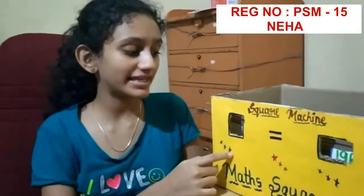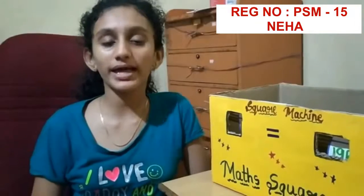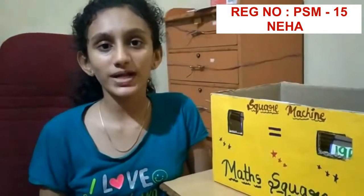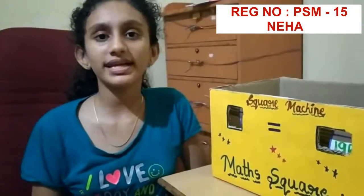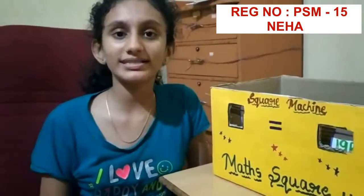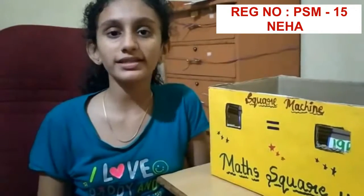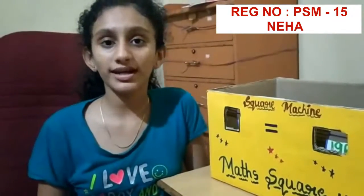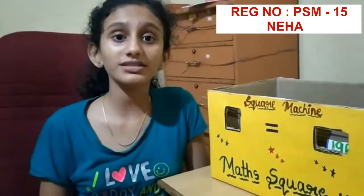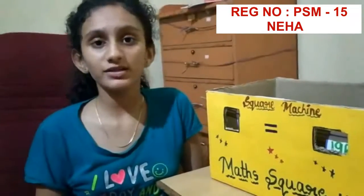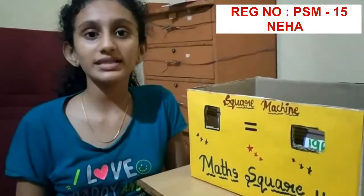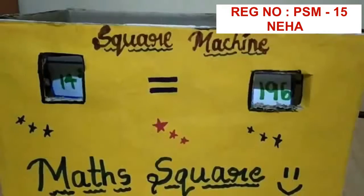Here I have taken difficult square numbers like 11 square, 12 square, 13 square. If we create an easy one like 2 square or 3 square, we don't need a model like that because everyone knows that. So I have created the numbers after 10.